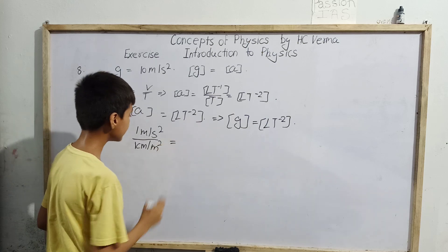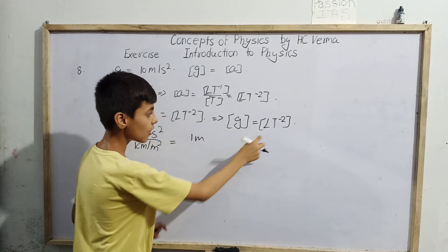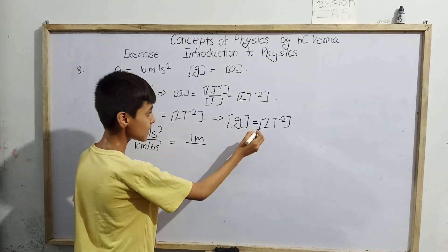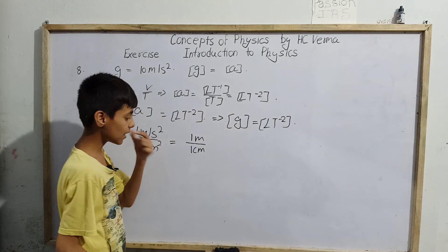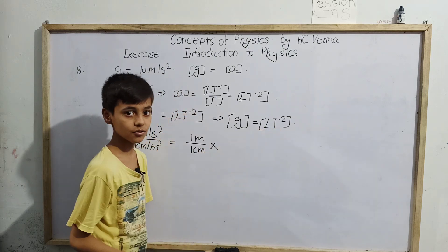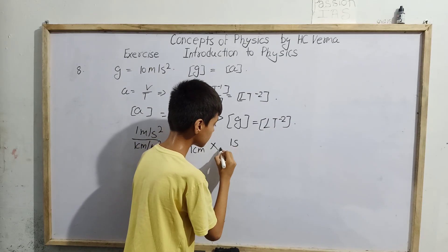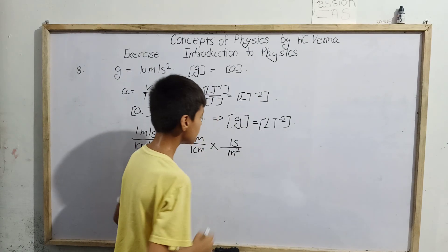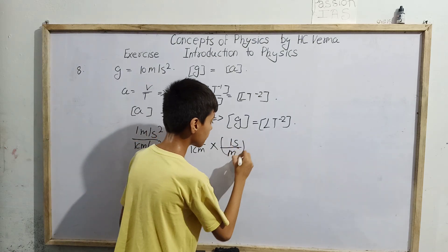So we write the ratio: 1 meter per second square divided by 1 centimeter per minute square. Here L means length. The length unit given is meters, and we need centimeters, so we write 1 meter divided by 1 centimeter. Then for the time part, using T⁻², we write 1 second divided by 1 minute, raised to the power minus 2.